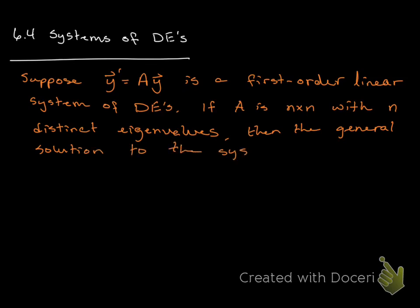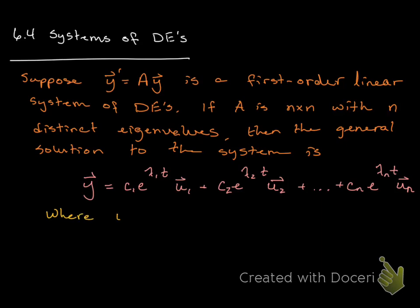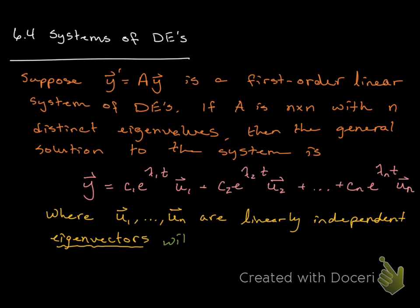is y = c₁e^(λ₁t)u₁ + c₂e^(λ₂t)u₂ + ... + cₙe^(λₙt)uₙ, where these u's are the linearly independent eigenvectors with corresponding eigenvalues λ₁ through λₙ.